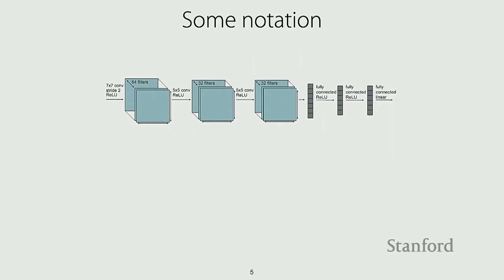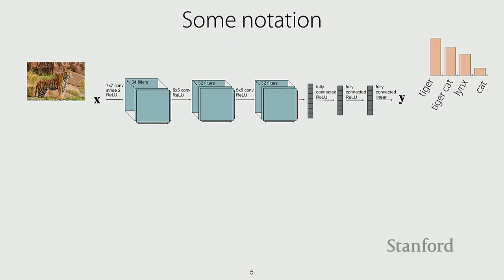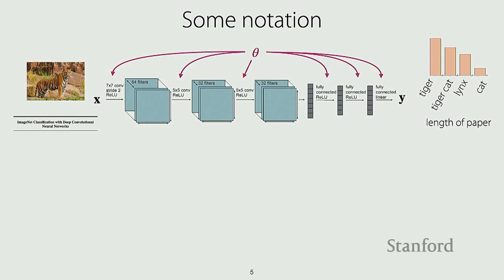Let's start with multitask learning. I'll introduce some notation that will be consistent throughout the course. We'll consider deep networks. The input to the network is X, the label is Y — sometimes we'll overload Y to also mean the predicted label. For example, maybe you want to classify an image as a tiger, tiger cat, or lynx. X could also be a piece of text, like the title of a paper, and maybe you want to predict the length of the paper. We'll use theta to denote the parameters of the neural network, and F to denote the function represented by the neural network, representing a probability over the label space given input X.